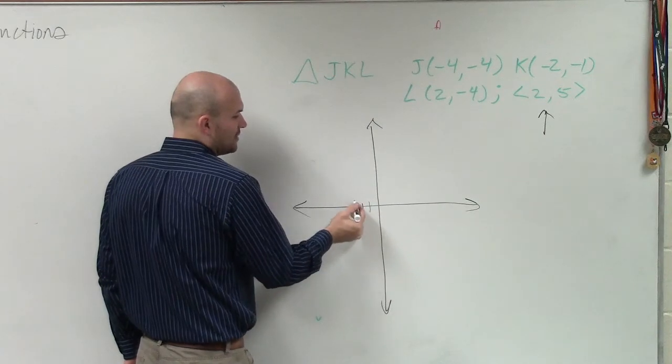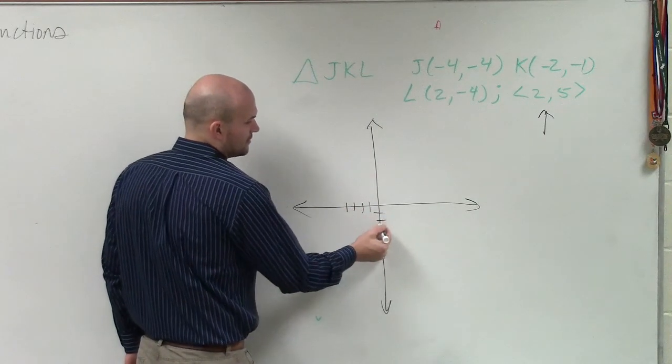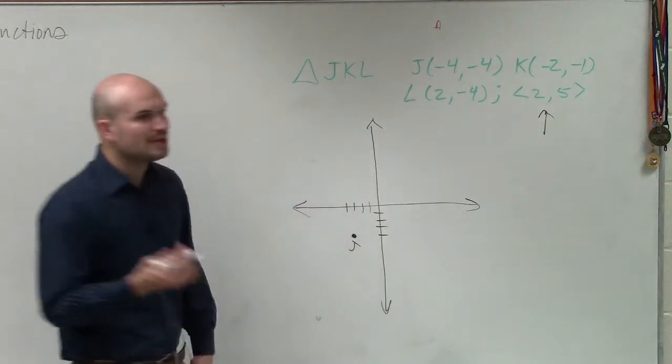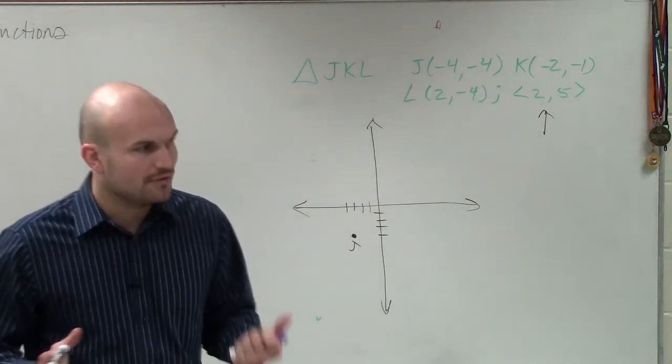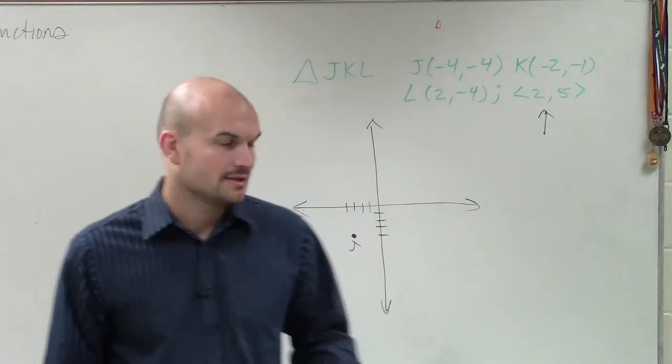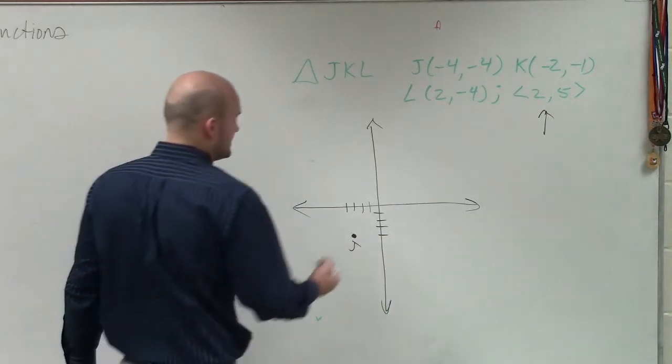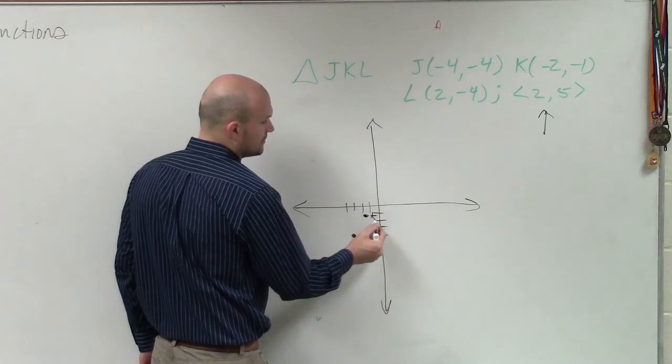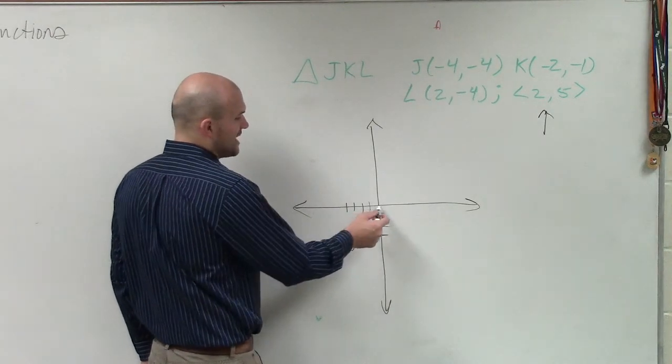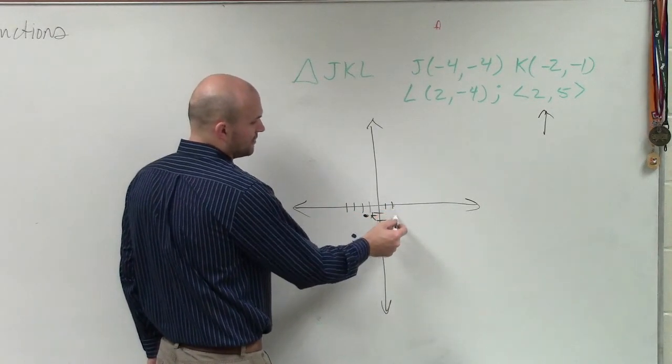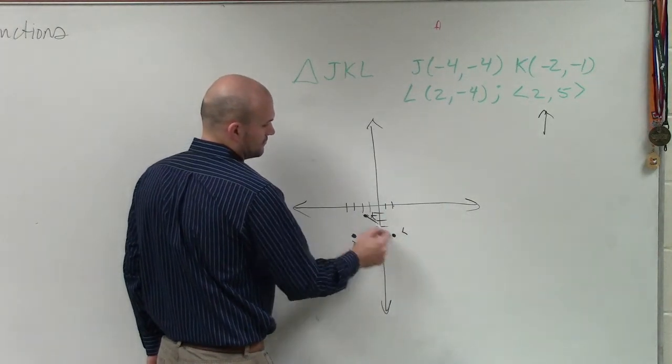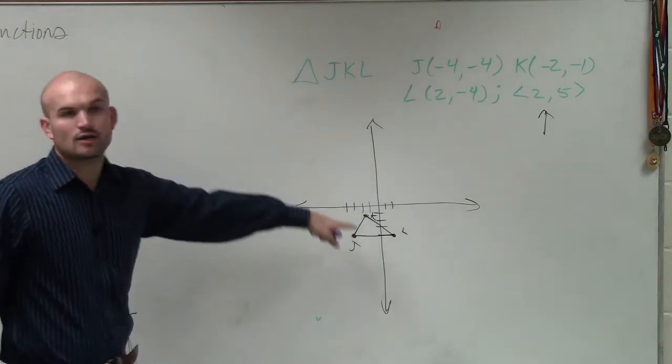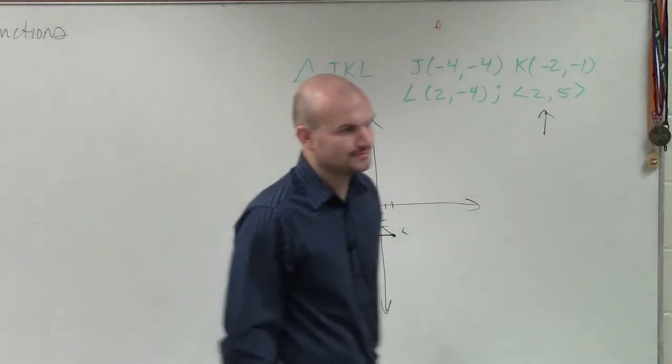So J is at negative 4, negative 4. And remember, guys, it's very important when you are plotting these, label the point. So we have J right there. K is at negative 2, negative 1. And then we have L, which is at positive 2, negative 4. And then the original thing says it's a triangle, which we can confirm this is a triangle.